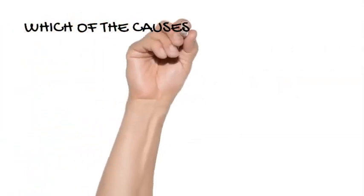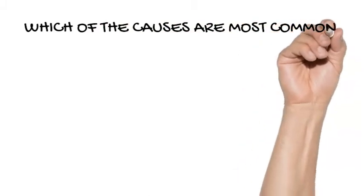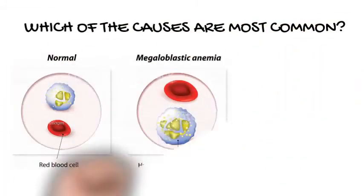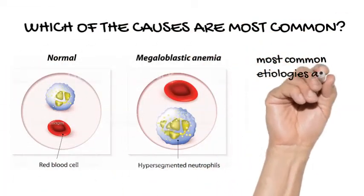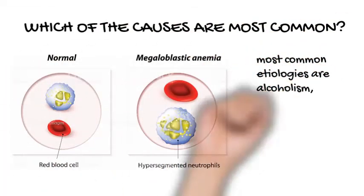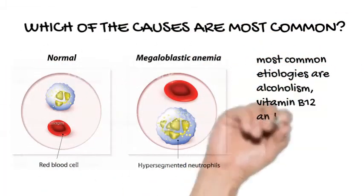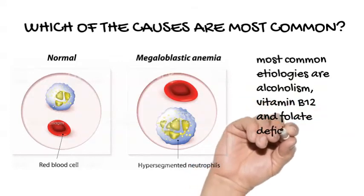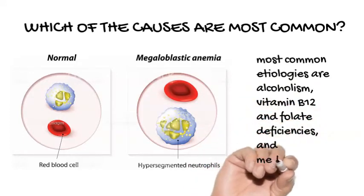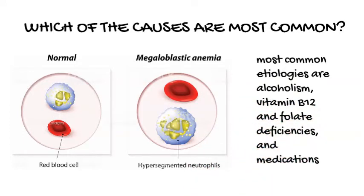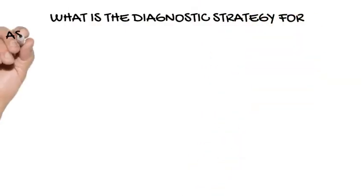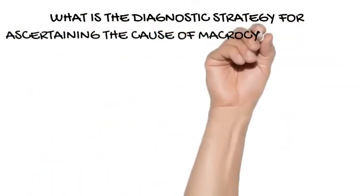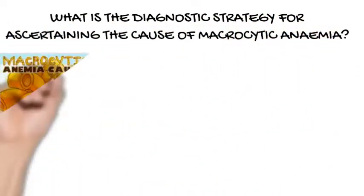Which of the causes are most common? The most common etiologies are alcoholism, vitamin B12 and folate deficiencies, and medications. What is the diagnostic strategy for ascertaining the cause of macrocytic anemia?